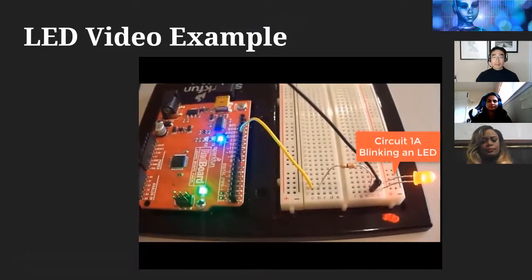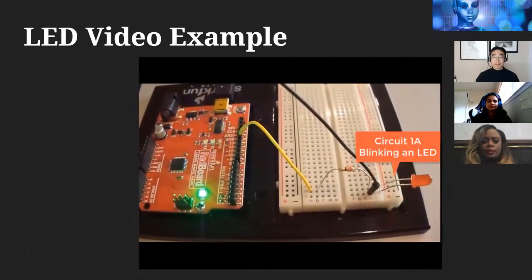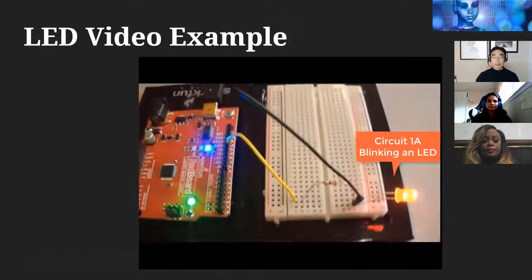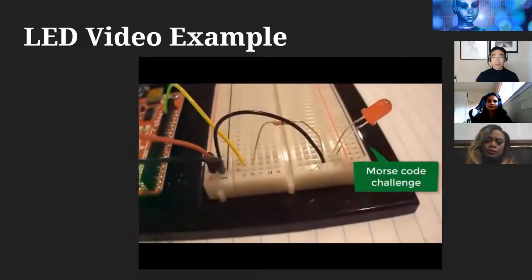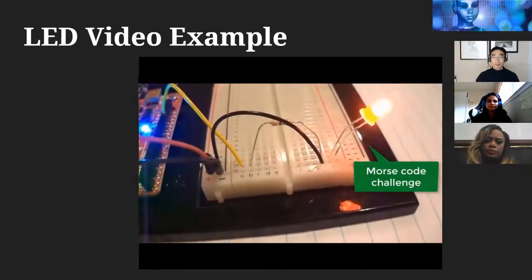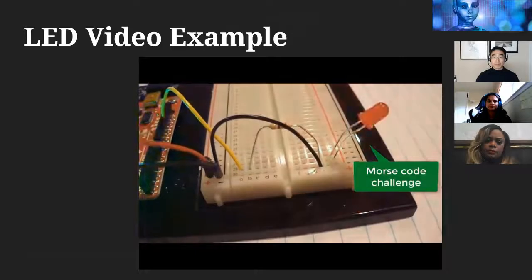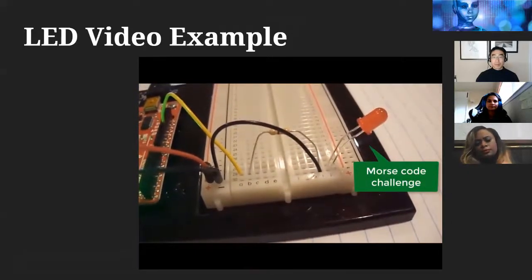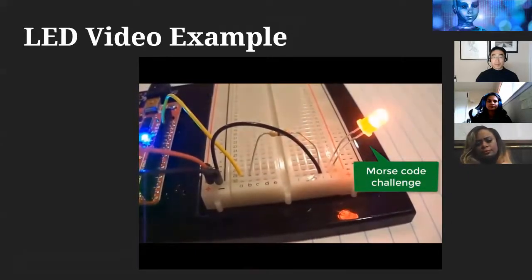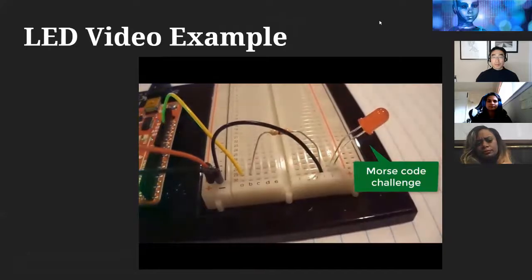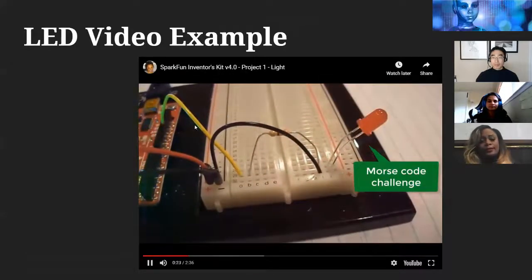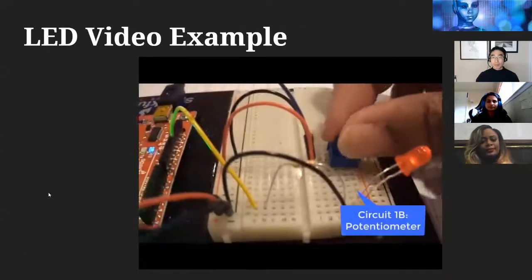In the video example, there's a resistor and an LED, and the electricity comes from the microcontroller. Similarly, your robot will have a microcontroller that sends out or receives signals — an LED, a resistor, and the electricity coming from the microcontroller.